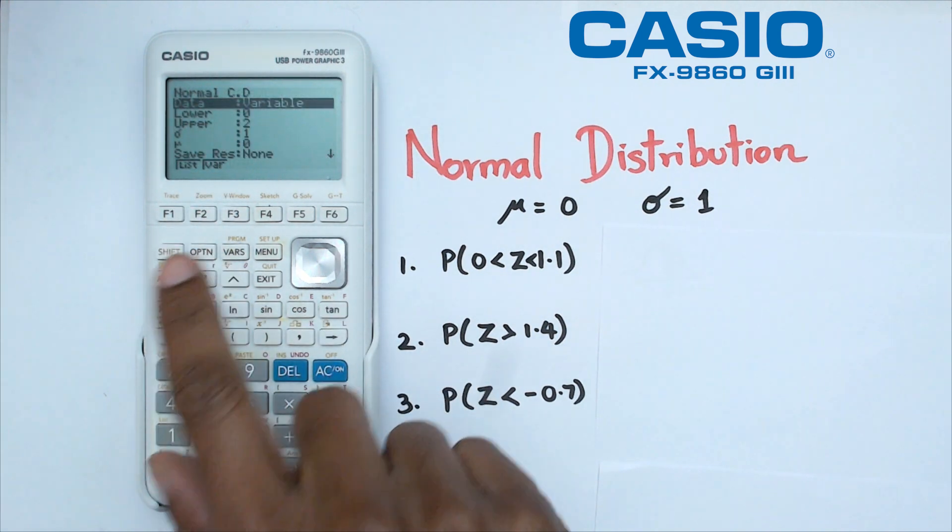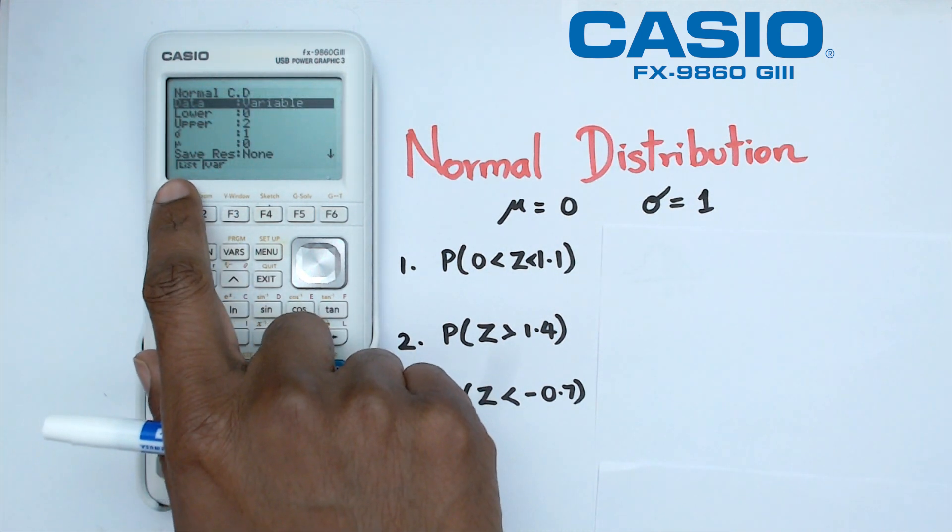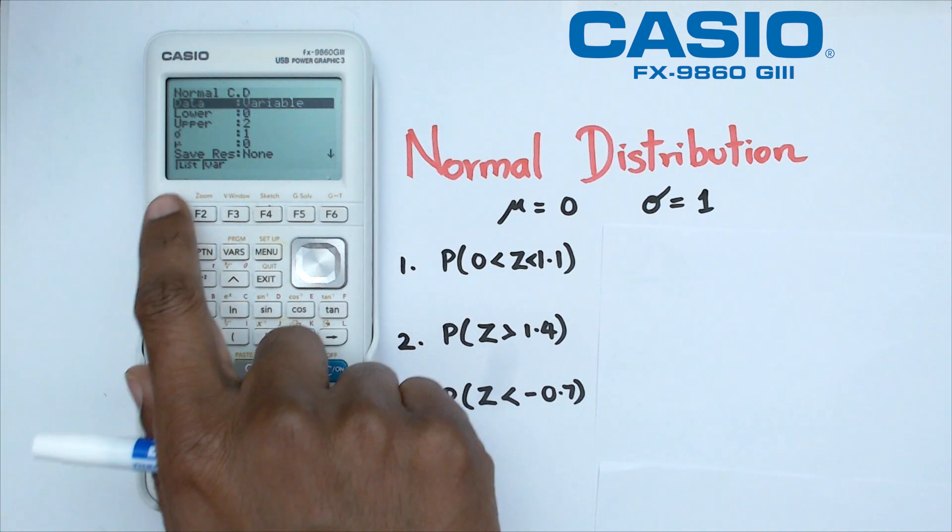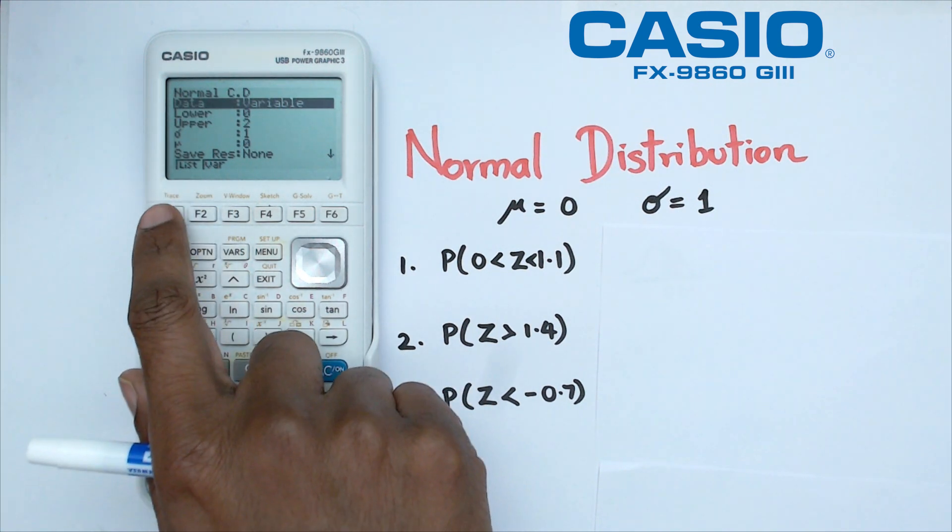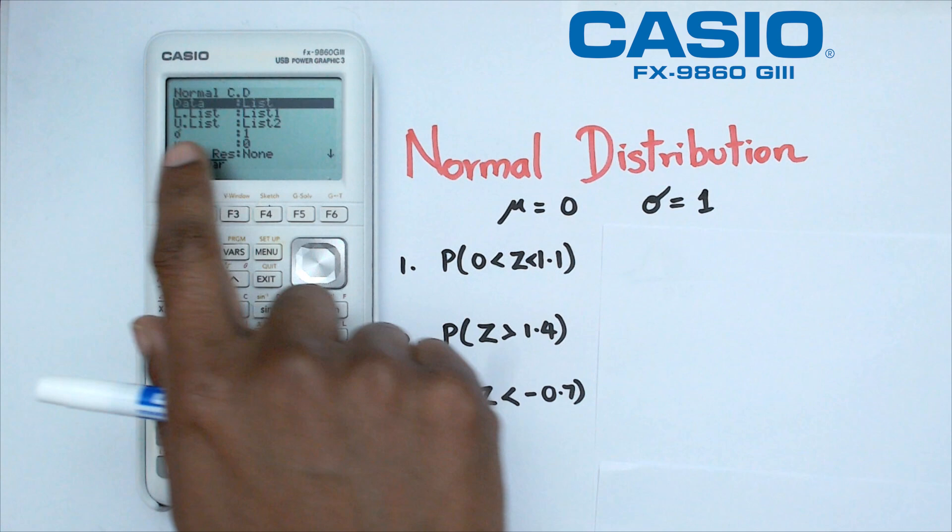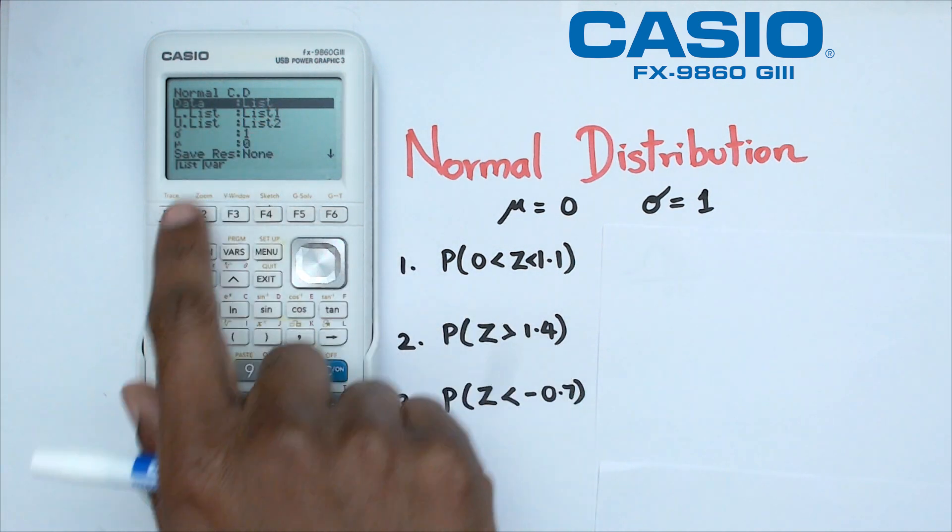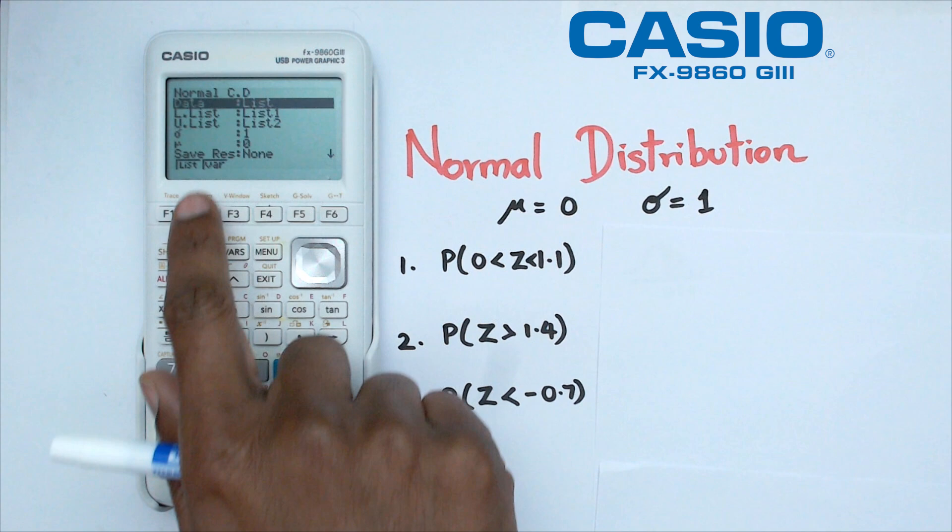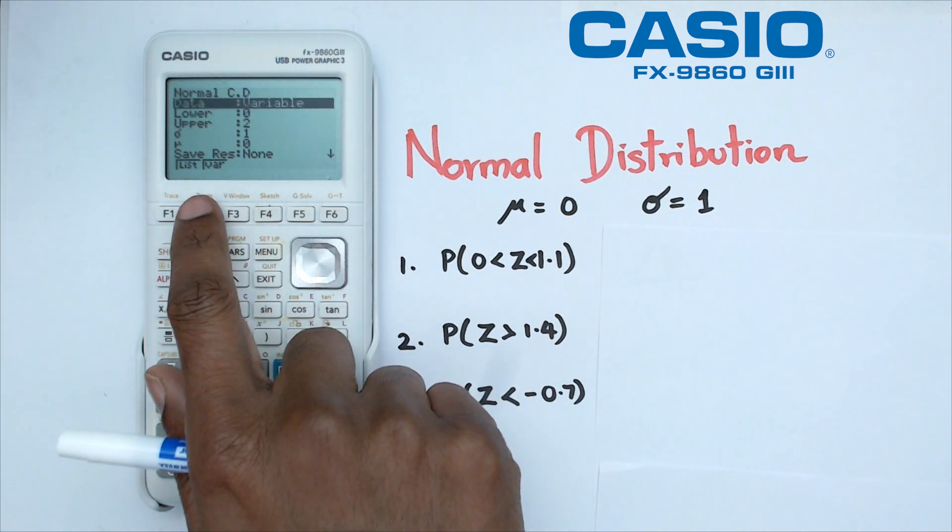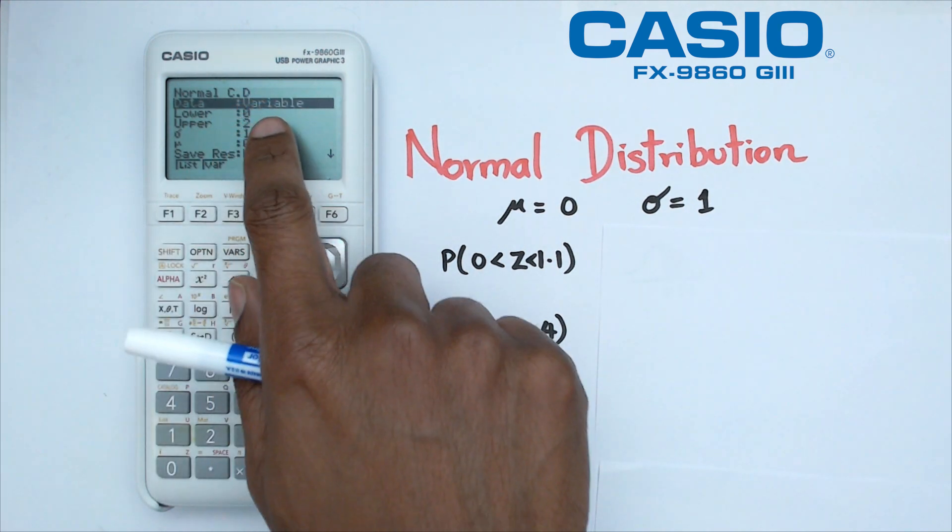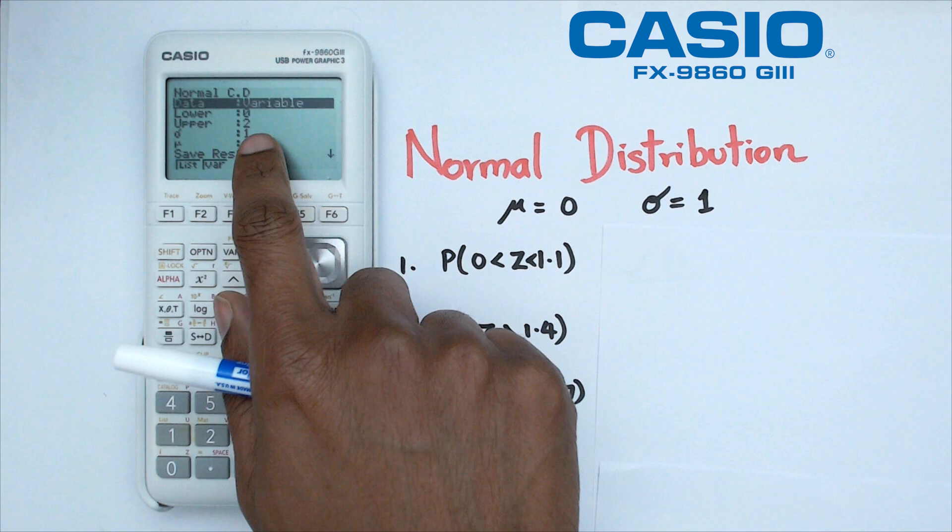Now when you click on this, sometimes you'll actually see that the calculator is set up as list. You need to change it to variable. So if it does look like this in your calculator, that means your data source is actually coming from the list and what we want to do is click on F2 which actually changes to variable. Now you've got your lower limit, upper limit, standard deviation and mean.